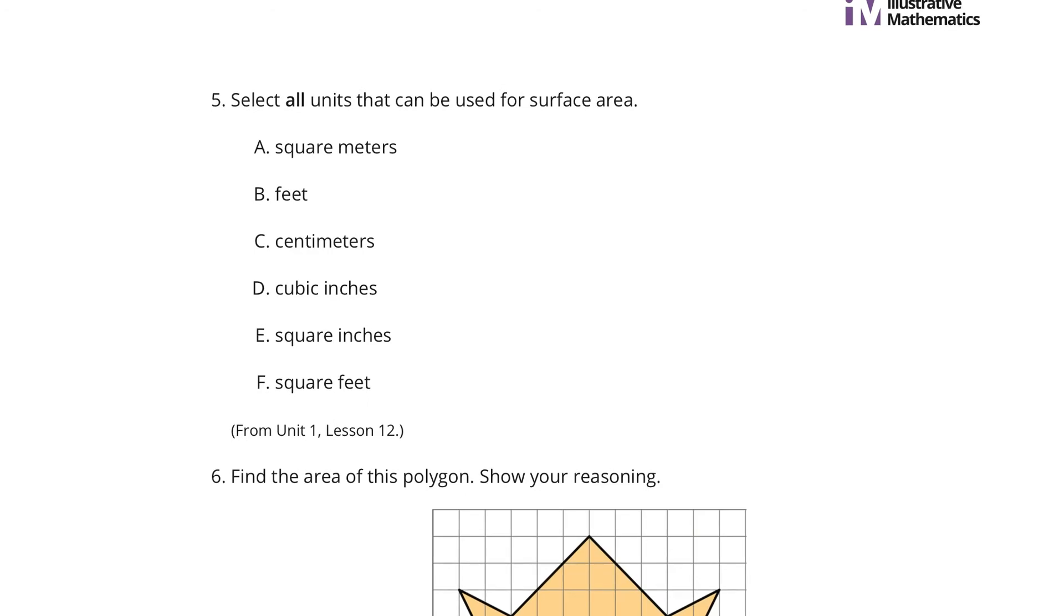Five, select all units that can be used for surface area. In other words, all units that are square units. That's A, square meters. Not B, that's a distance. So is centimeters. Cubic inches, and that deals with volume. And then, square inches and square feet both deal with areas and surface areas, for that matter.